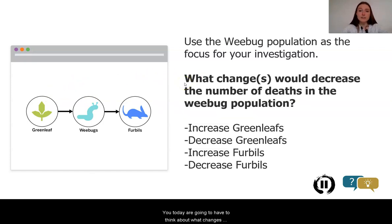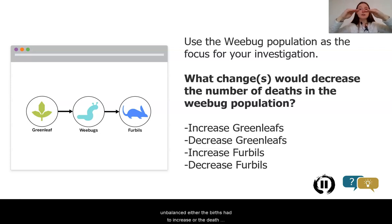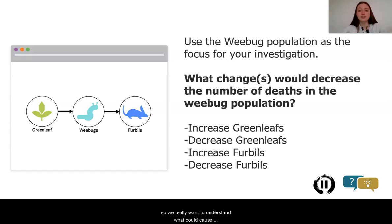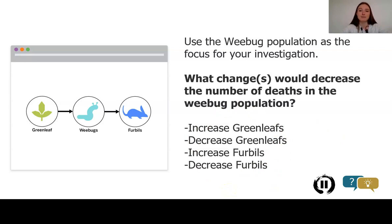You are going to think about what changes could decrease the number of deaths in the wee bug population. We know that for the moon jellies, the balance of births and deaths became unbalanced — either births had to increase, deaths had to decrease, or maybe both. So we really want to understand what could cause deaths to decrease. Pause the video and discuss with somebody: what is your prediction or initial idea for what change might affect and decrease the number of deaths in the wee bug population?